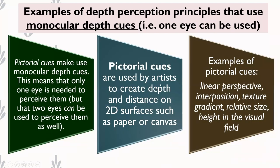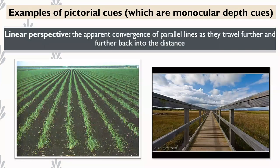Pictorial cues are also examples of monocular depth cues, used by artists in pictures, art forms, and paintings. The first type of pictorial cue is linear perspective, which suggests that two parallel lines running into the distance will appear to meet at some point.